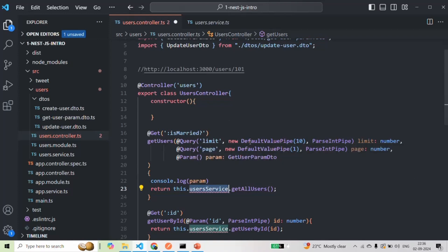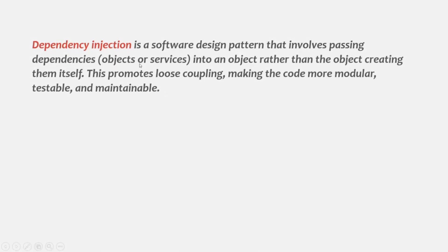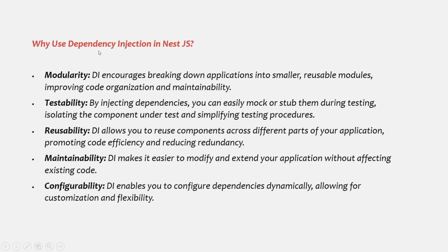This is called dependency injection. Dependency injection is a software design pattern that involves passing dependencies into an object rather than the object creating them itself. This promotes loose coupling, making the code more modular, testable, reusable, and maintainable.